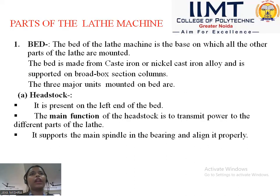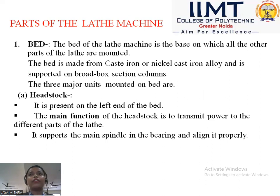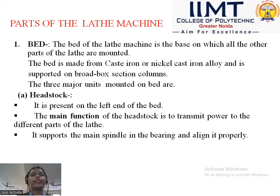Now I am going to discuss the parts of the lathe machine. The most important part is the bed, which is the root of the machine. The bed of the lathe machine is the base on which all other parts are mounted. It is made from cast iron or nickel cast iron alloy and is supported on box section columns. The three most important parts mounted over the bed are: headstock, tailstock, and carriage.